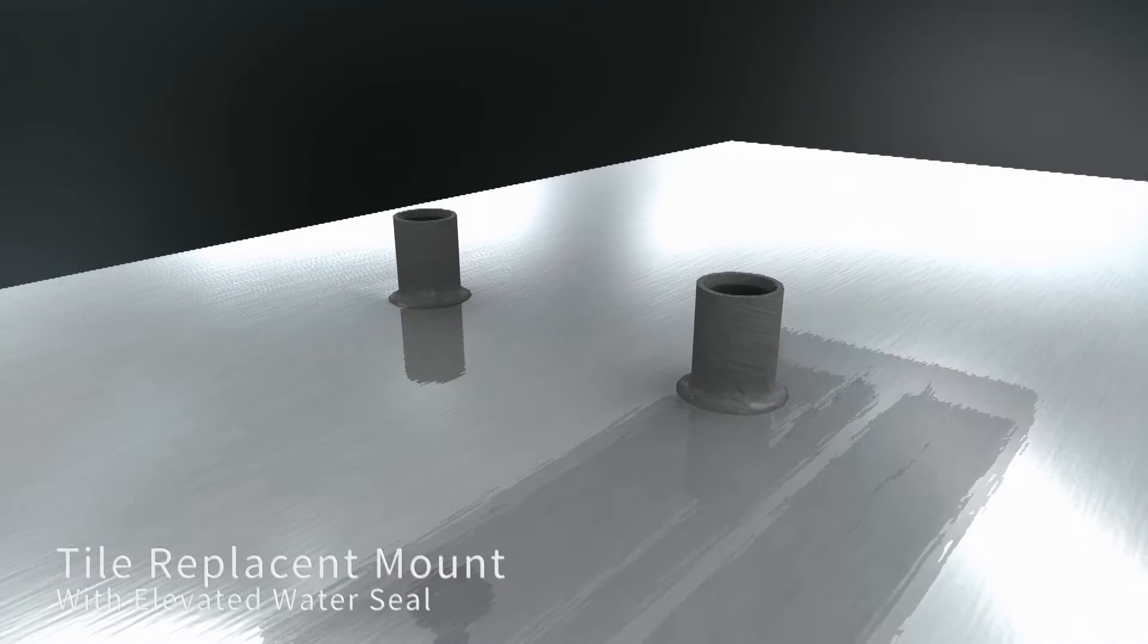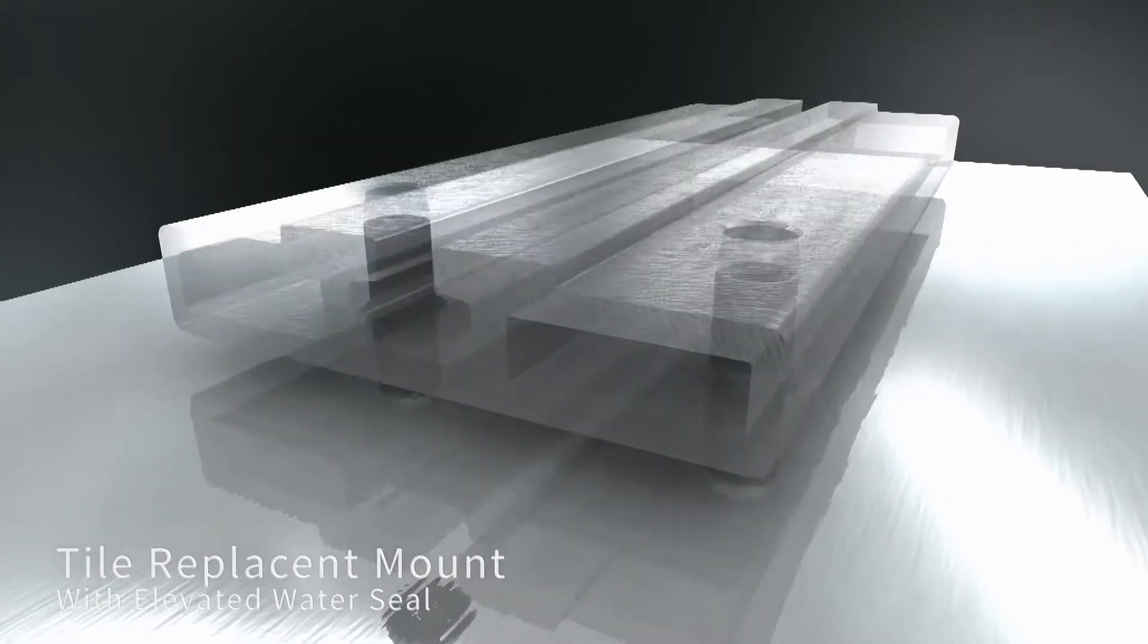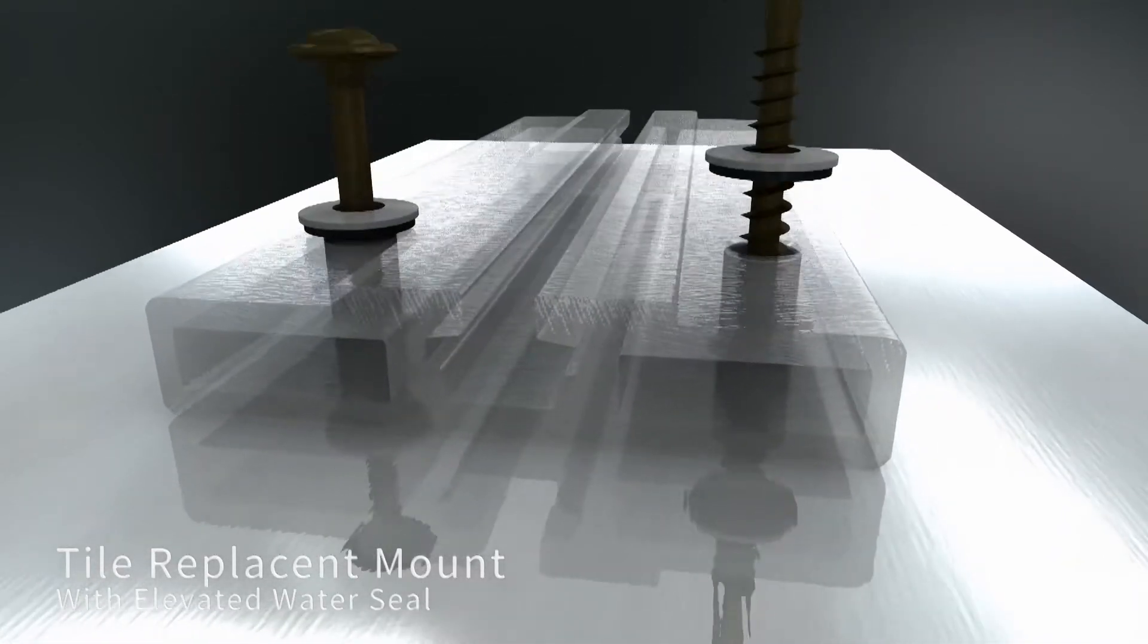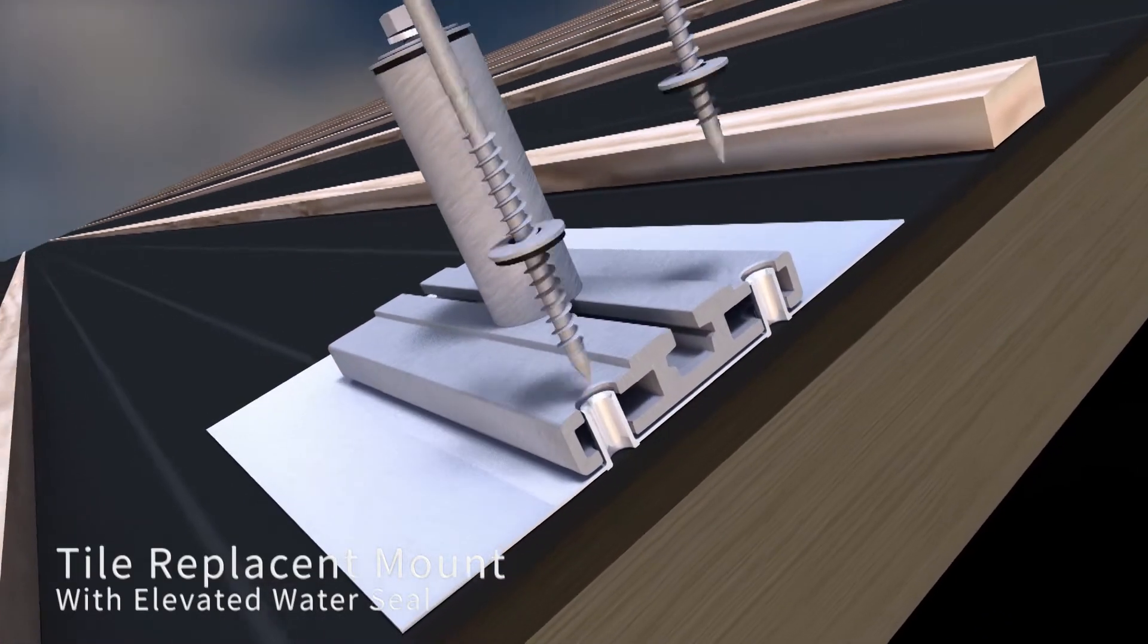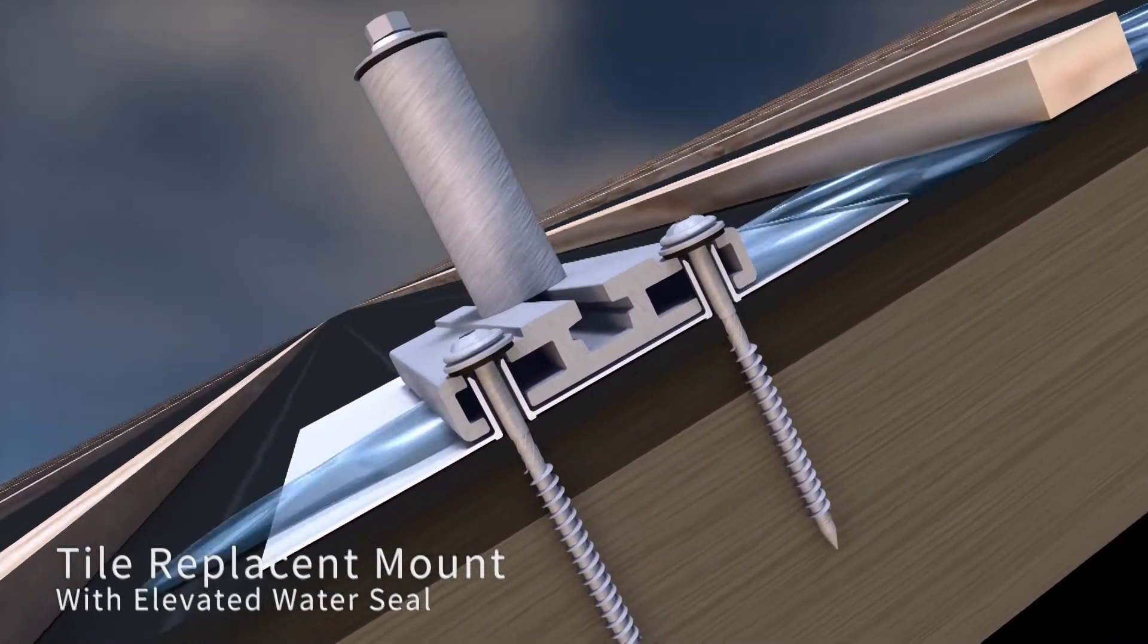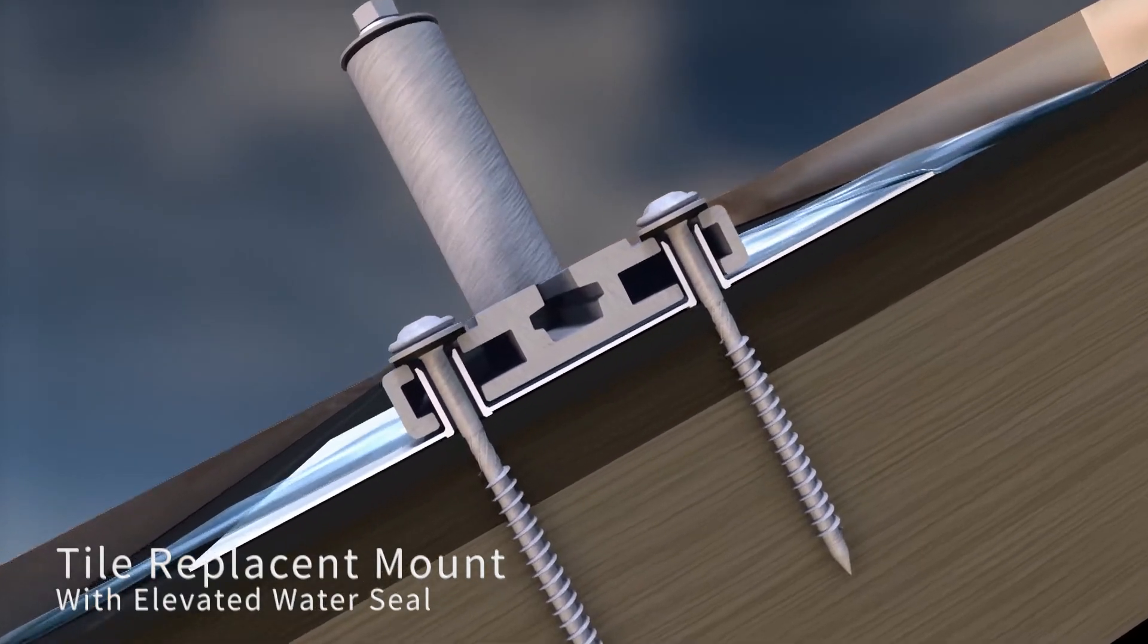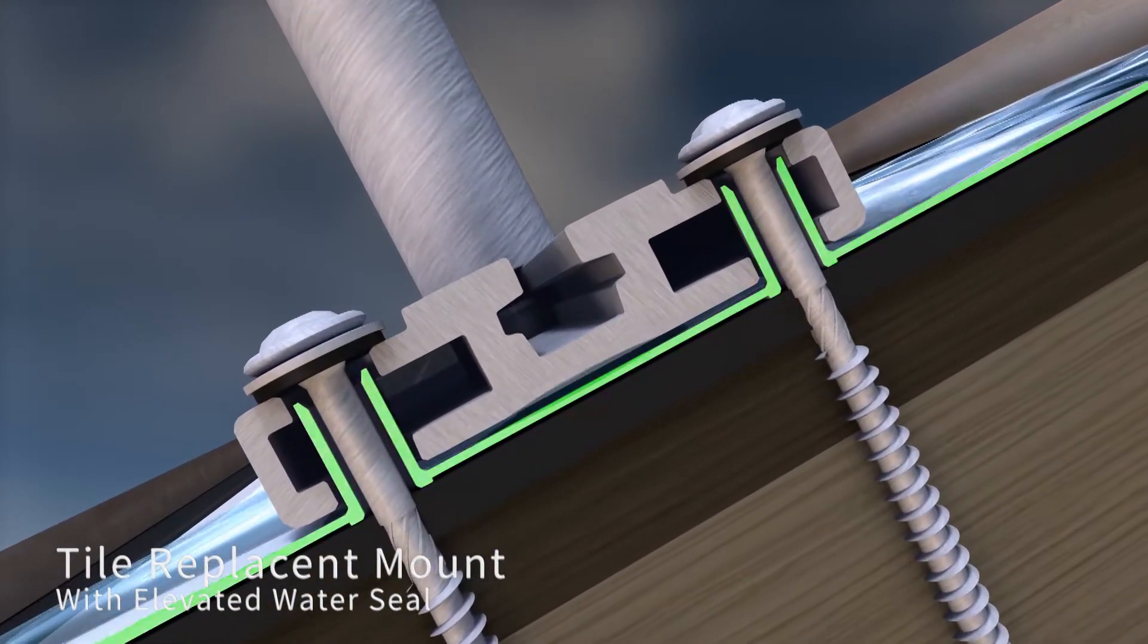Elevated water seal technology features a fused aluminum flute that raises the point of the seal at the penetration seven-tenths of an inch above the metal flashing. Any rainwater that makes its way down the felt underlayment beneath the tiles is now met by a wall of seamless fused aluminum.